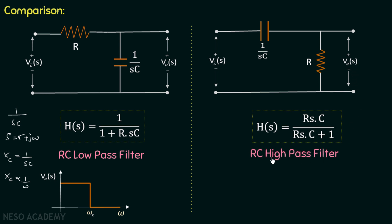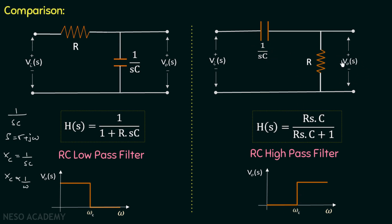This is why we call this filter the RC high pass filter. Its filtering characteristics show output on the y-axis and frequency on the x-axis. For low frequency the capacitor acts as open circuit and the output is zero, but for high frequency the capacitor acts as short circuit and the output is non-zero. This filter blocks low-frequency signals and only allows high-frequency signals to pass.